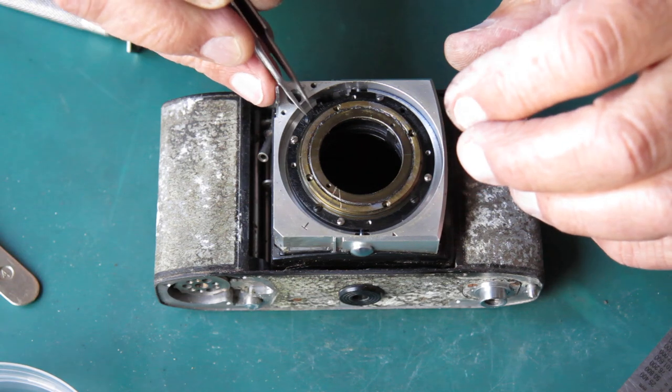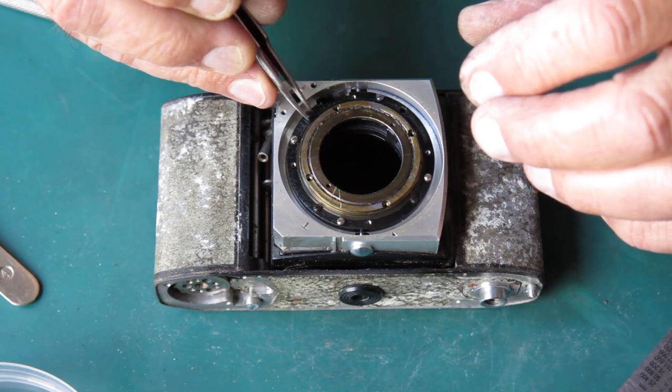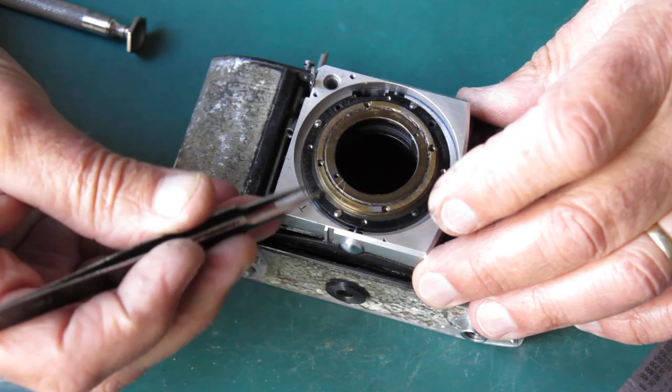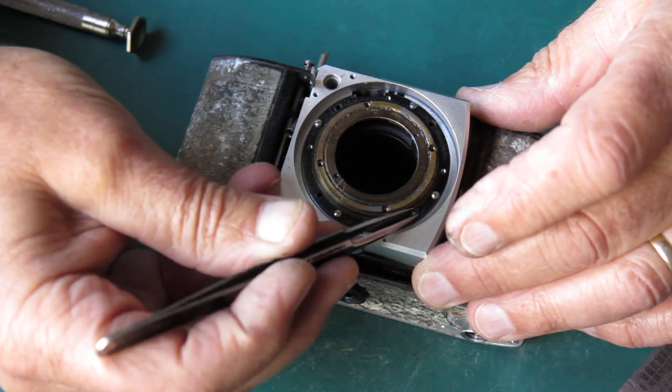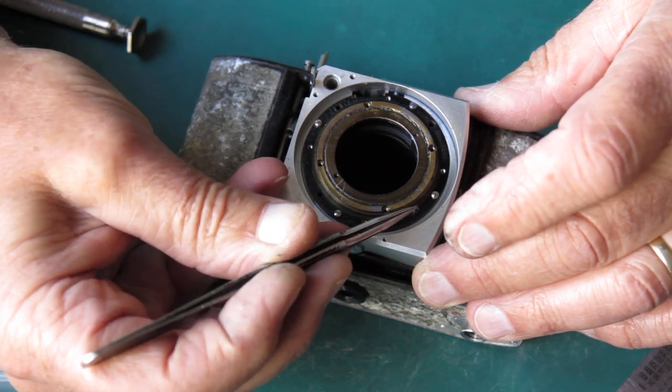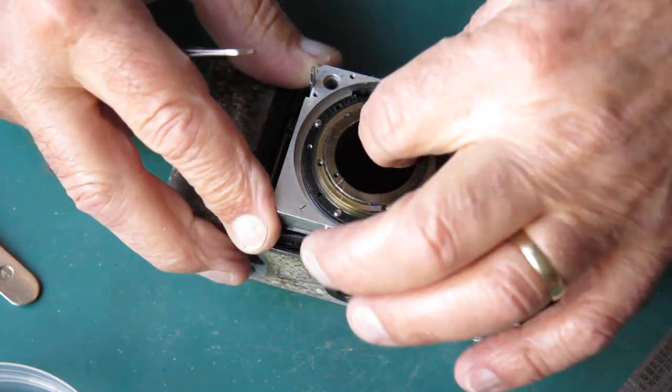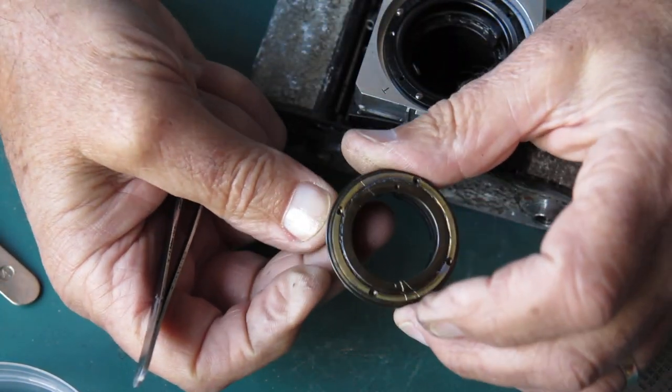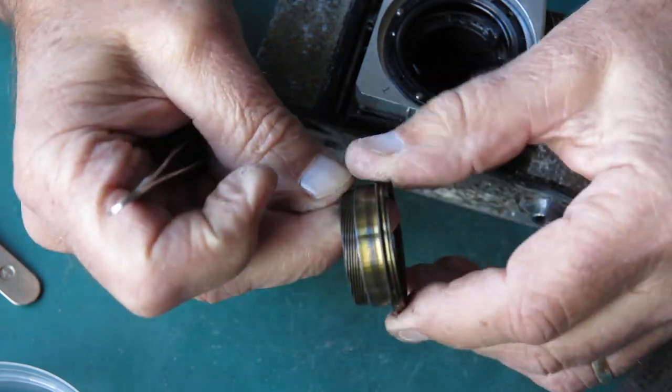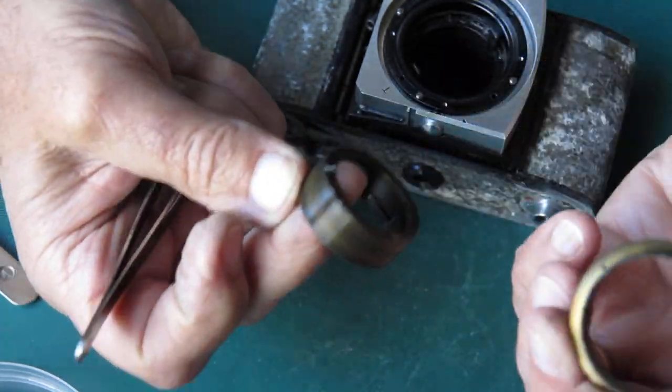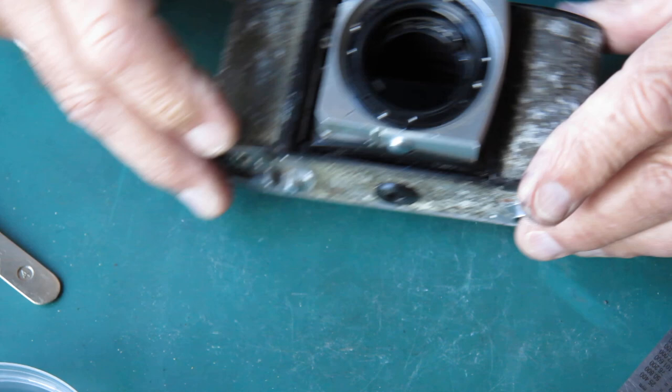We'll have those black screws out. All of this is just a bit sticky with old grease. Lift out the inner and outer helical together. This moves comparatively freely, so it's not a bad example.